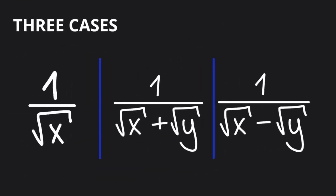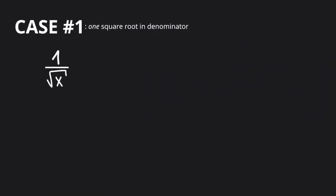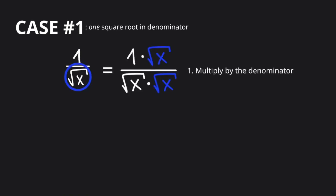There are three different cases. In the first case, we have one square root in the denominator. All we need to do is multiply the top and the bottom by the denominator. And then, all that's left to do is to simplify.